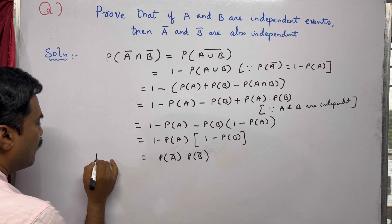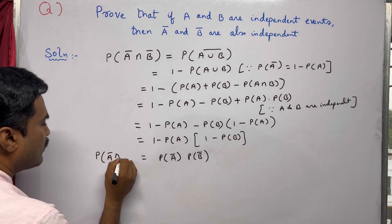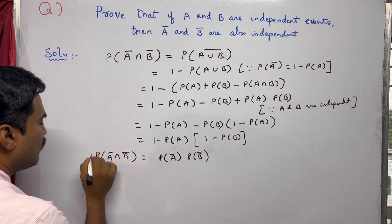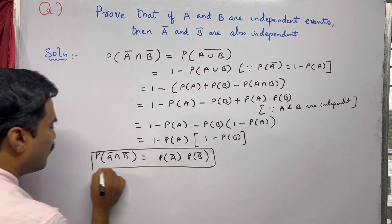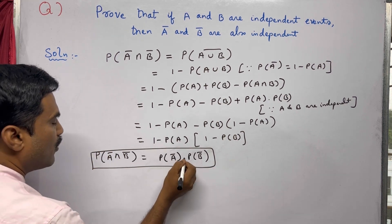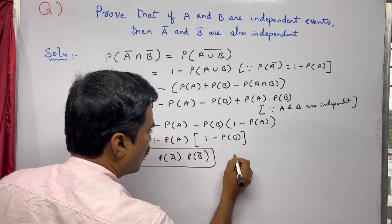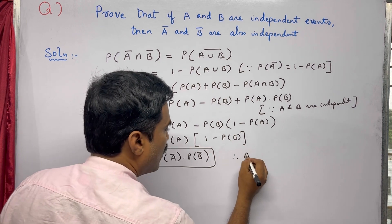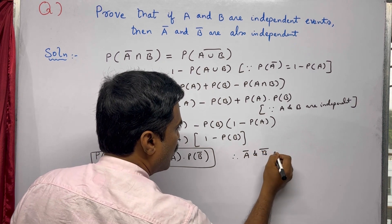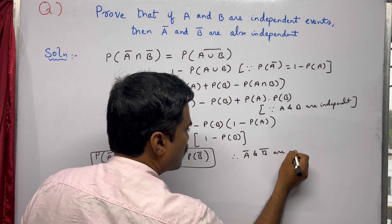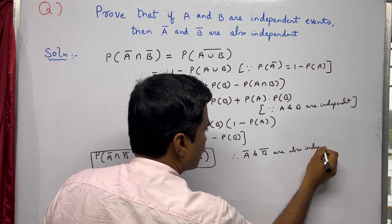Therefore, P(A-bar ∩ B-bar) = P(A-bar) · P(B-bar). We have proved this result, so we can give the conclusion that A-bar and B-bar are also independent events.